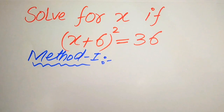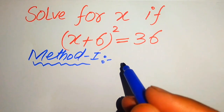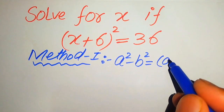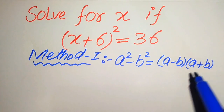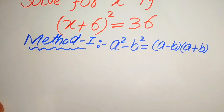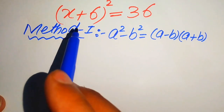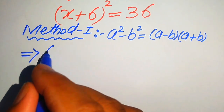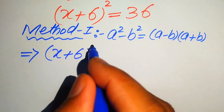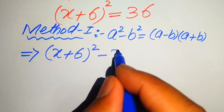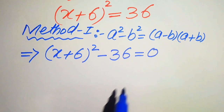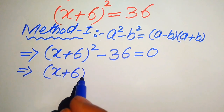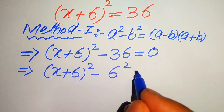In the first method we apply the algebraic formula a² - b² = (a - b)(a + b). To apply this formula, we first simplify: we have (x + 6)² and move 36 to the left hand side, making it minus 36, so the whole equation equals zero. We write 36 as 6².